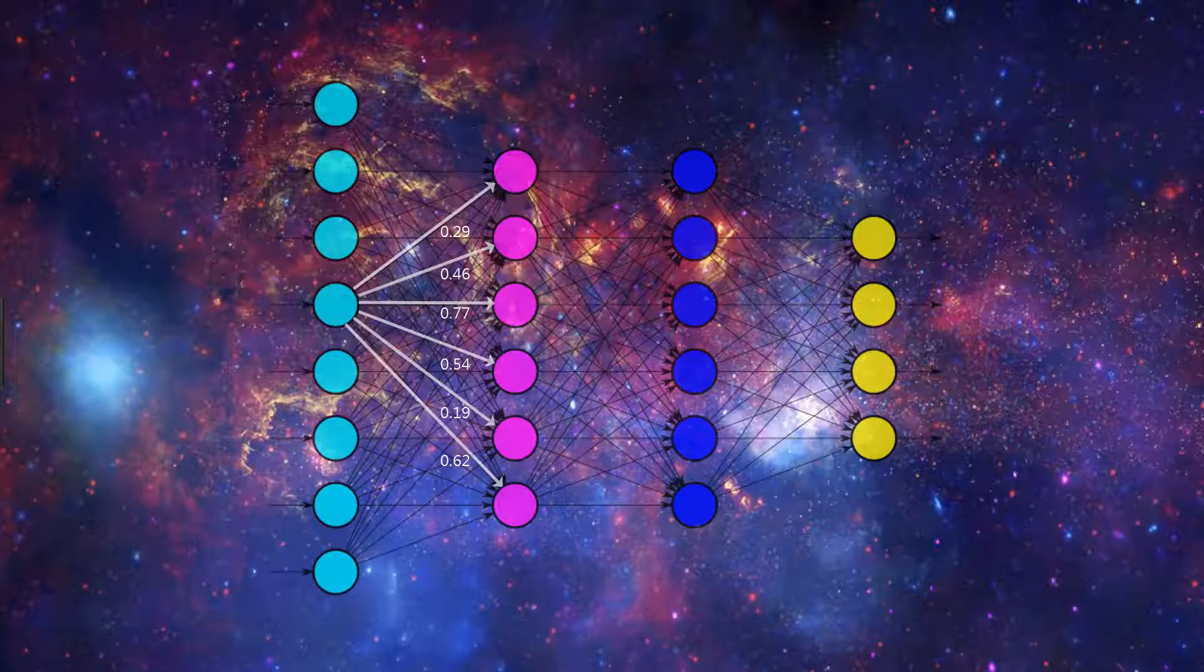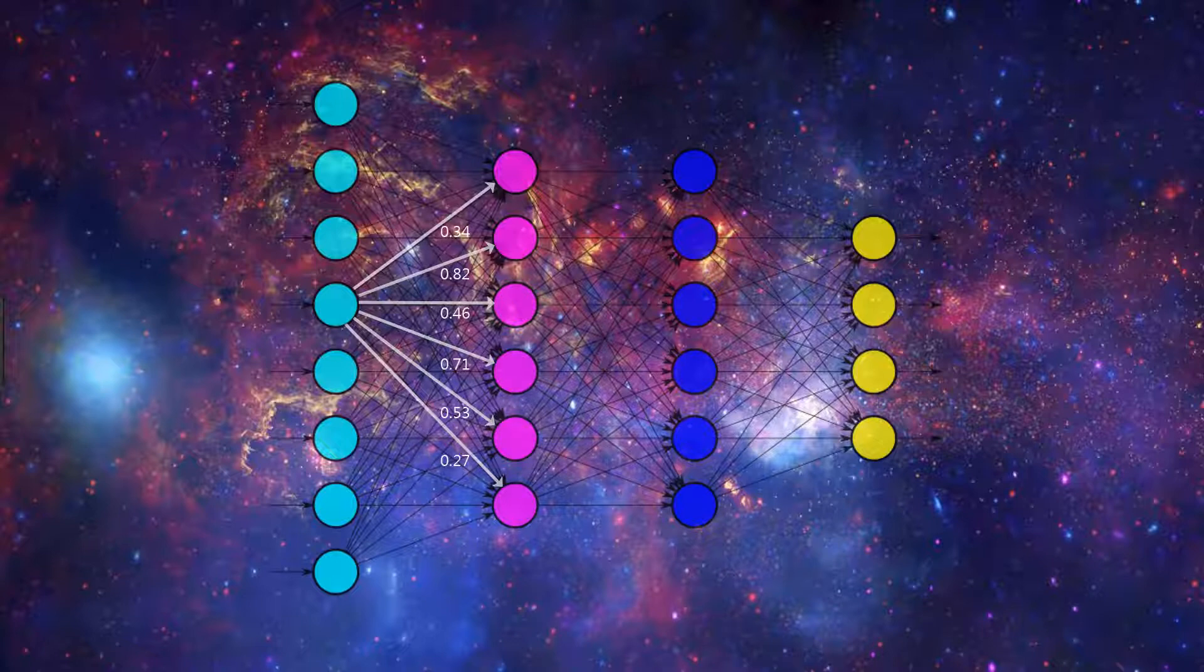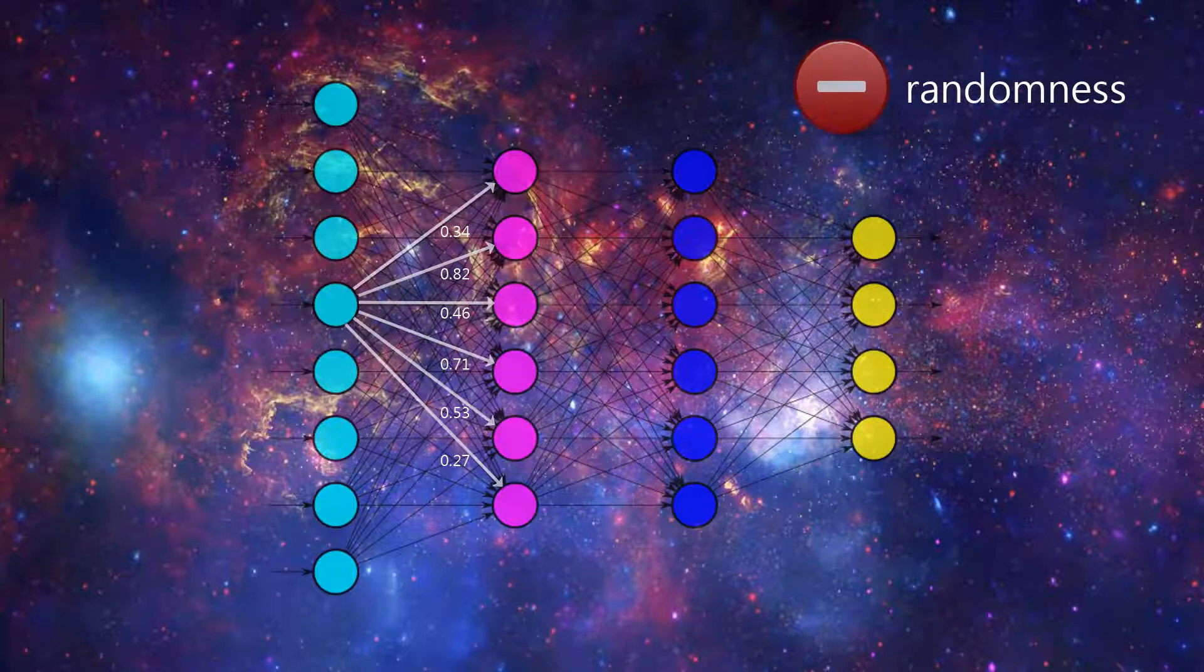To quickly reiterate, the whole reason that we may not get exactly reproducible results from our model in the first place is due to the random nature of some pieces in our model and the training algorithm. So essentially what we need to do is strip out this randomness.